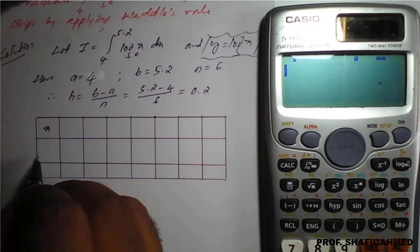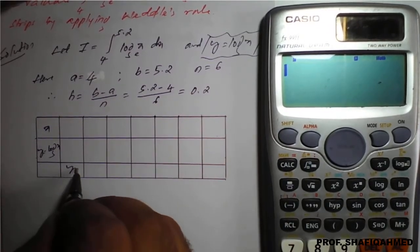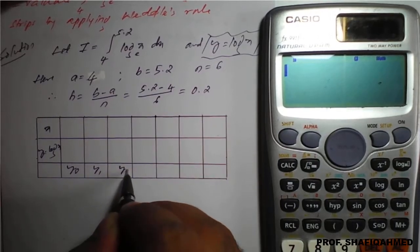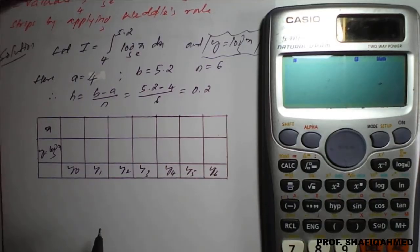The table has x values and y equals log x. We label these as y0, y1, y2, y3, y4, y5, and y6. We need to fill the values of x.